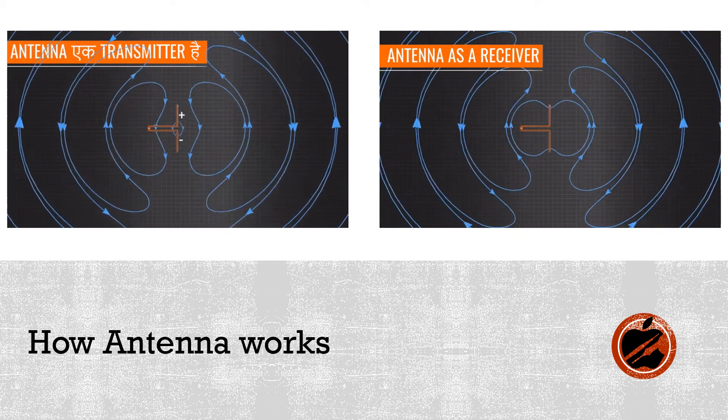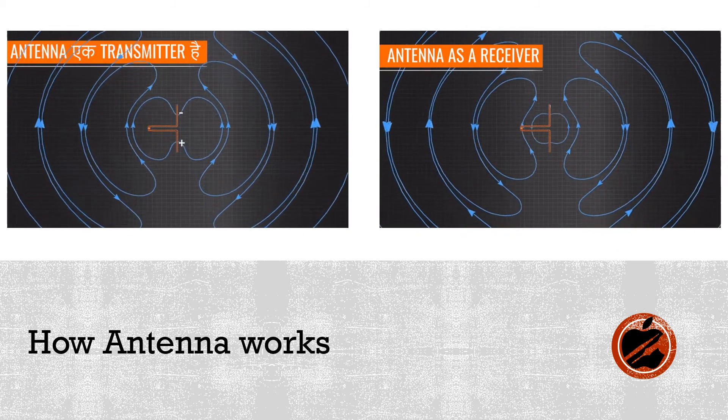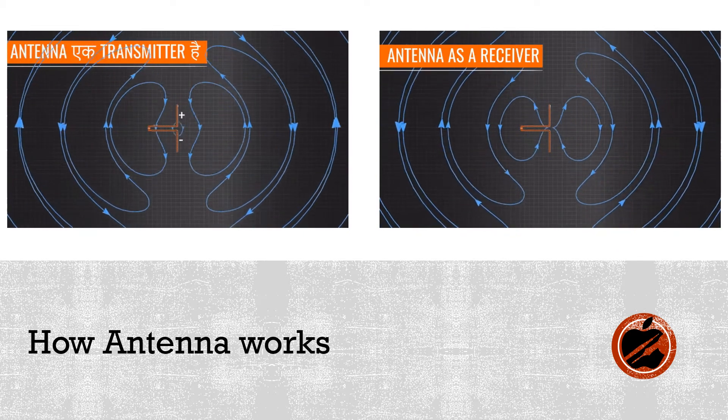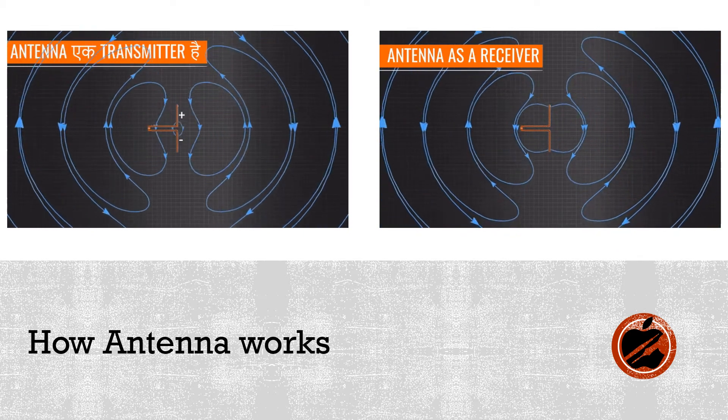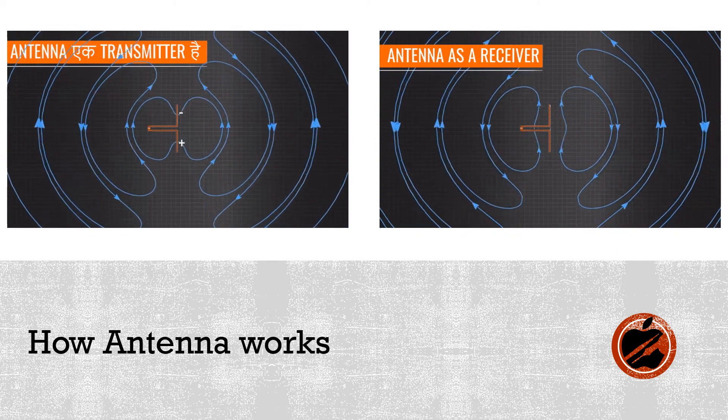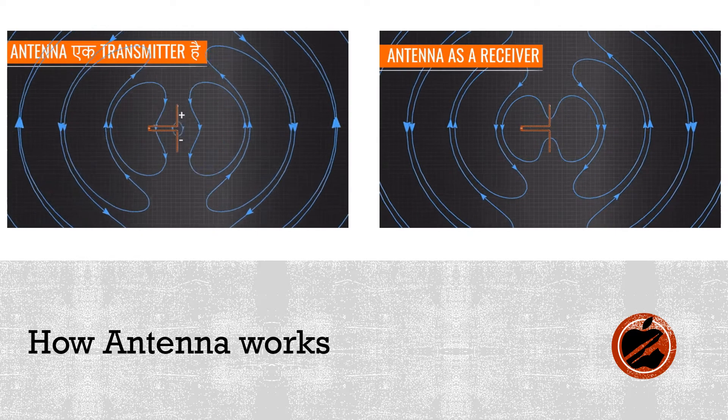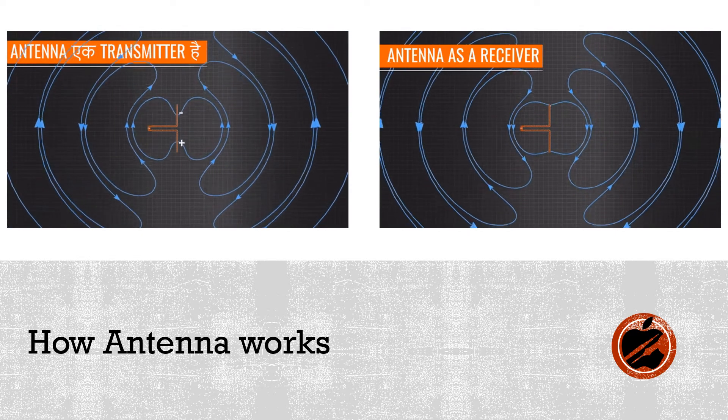In receiver mode, positive and negative charges flow based on the radiation present near the metal strip, and that flow of current is measured as a signal.